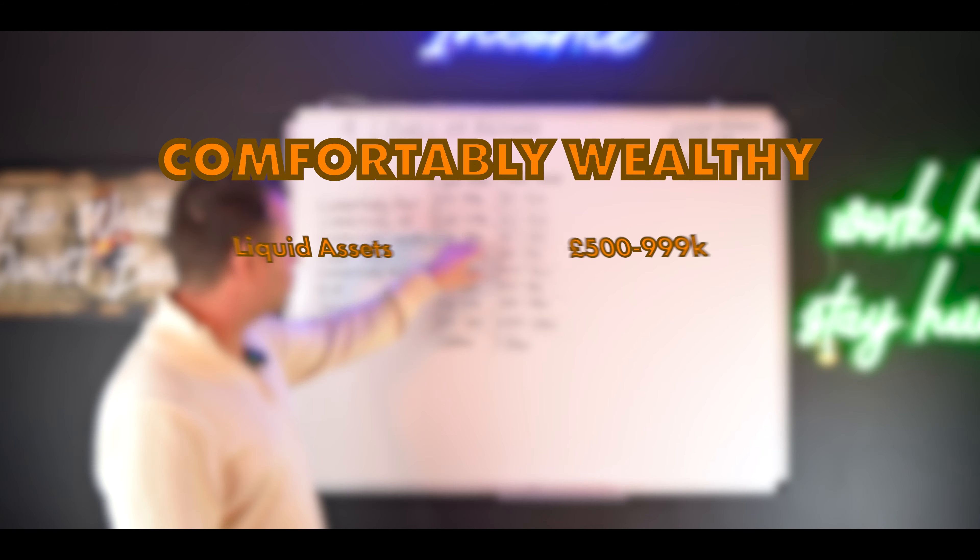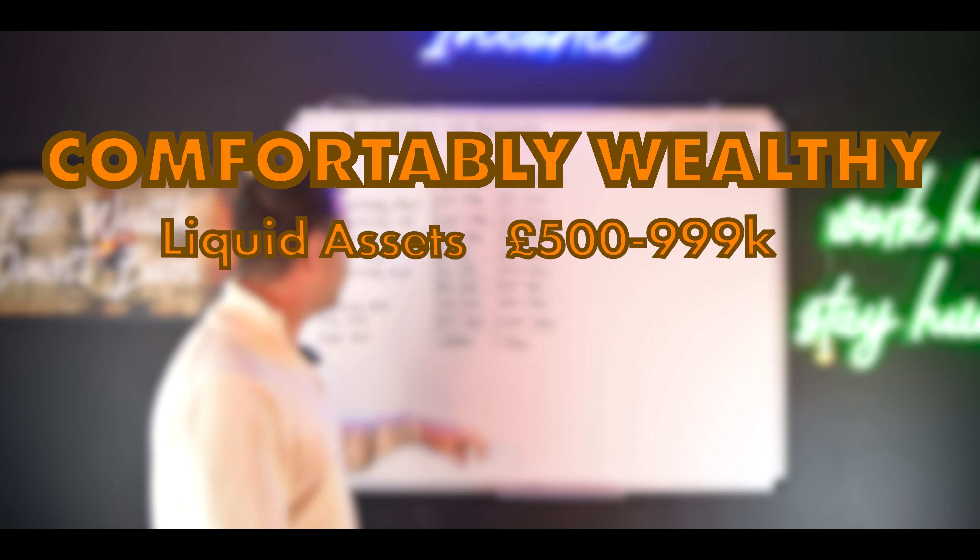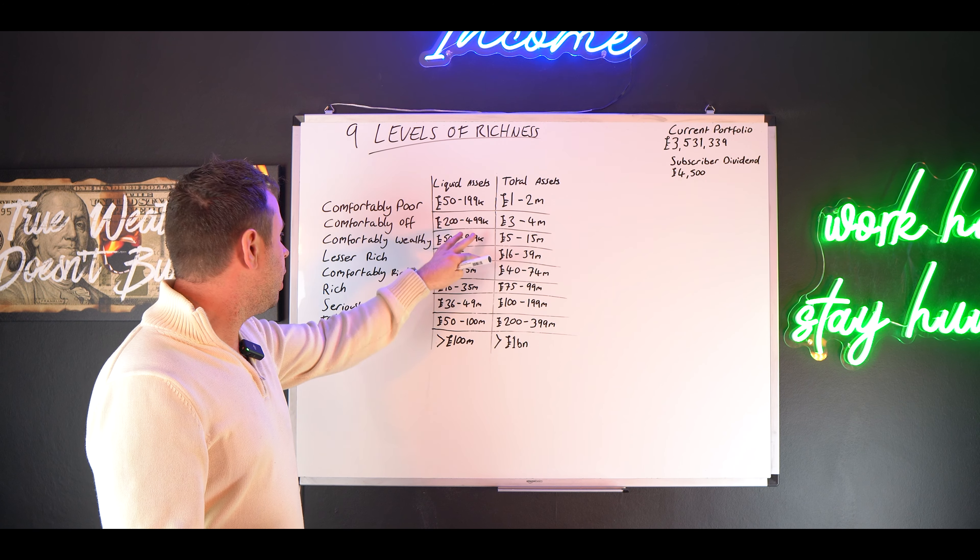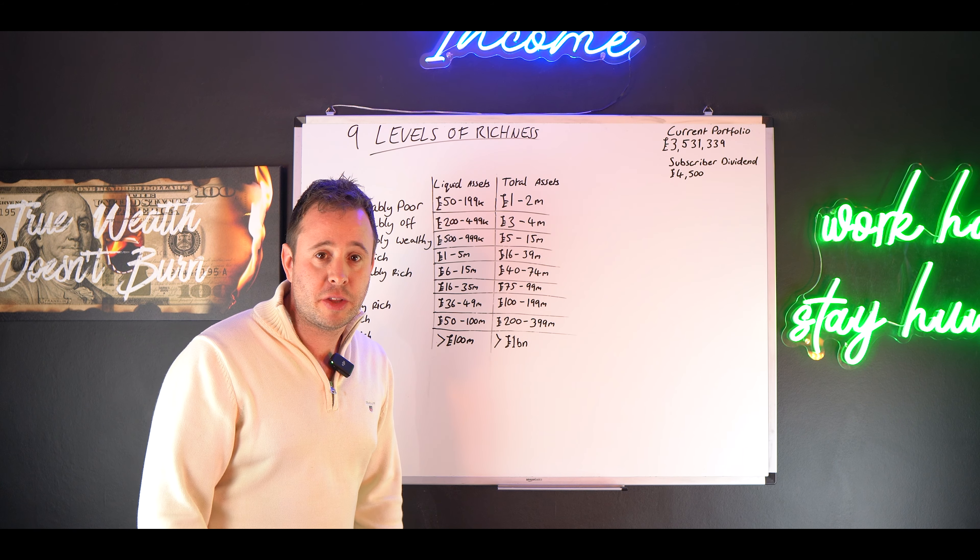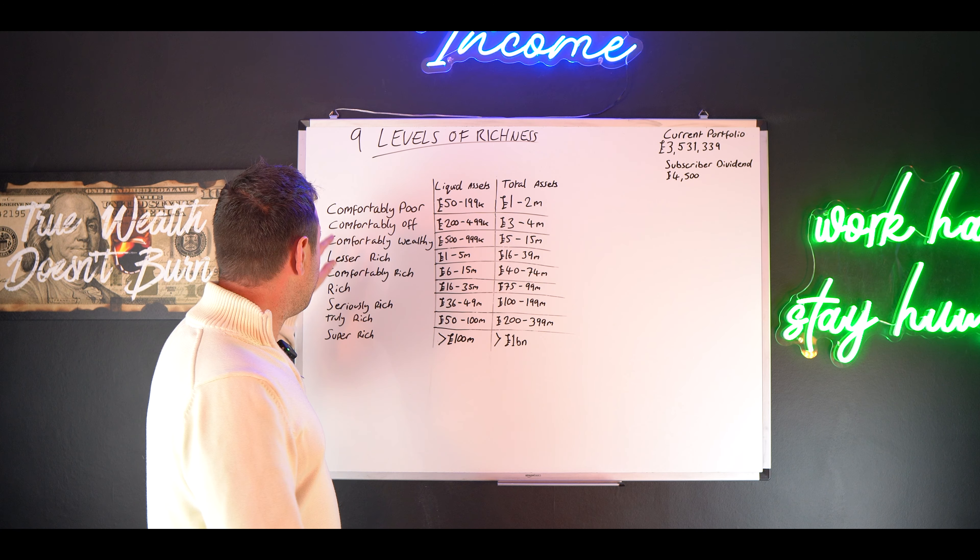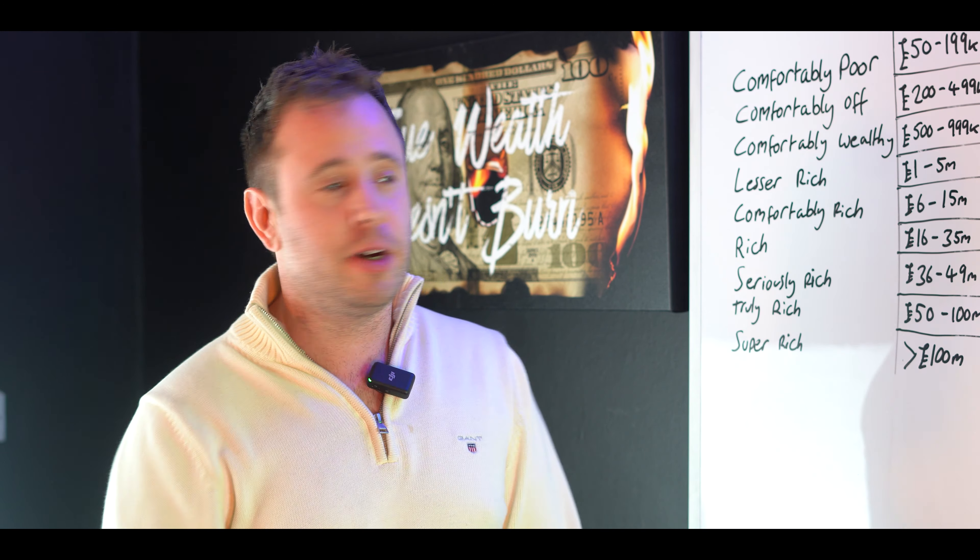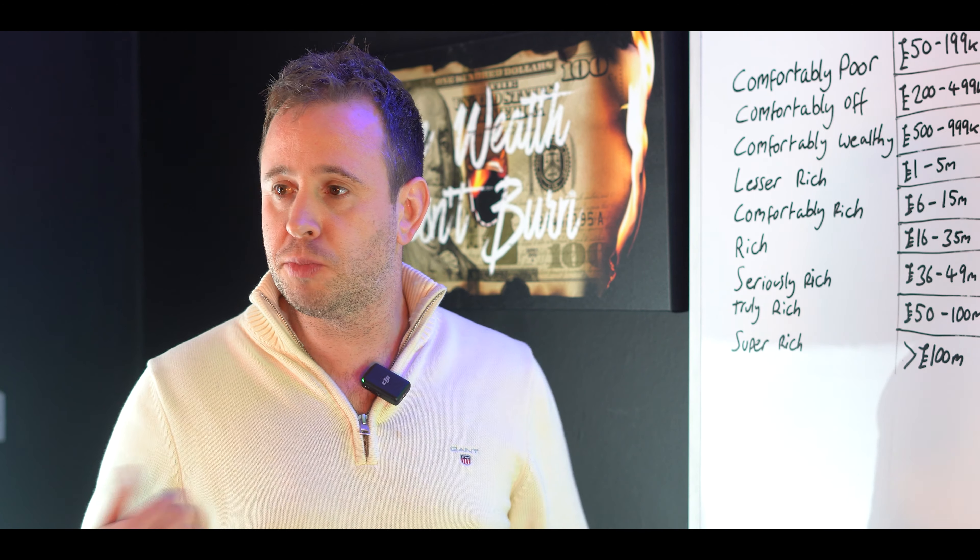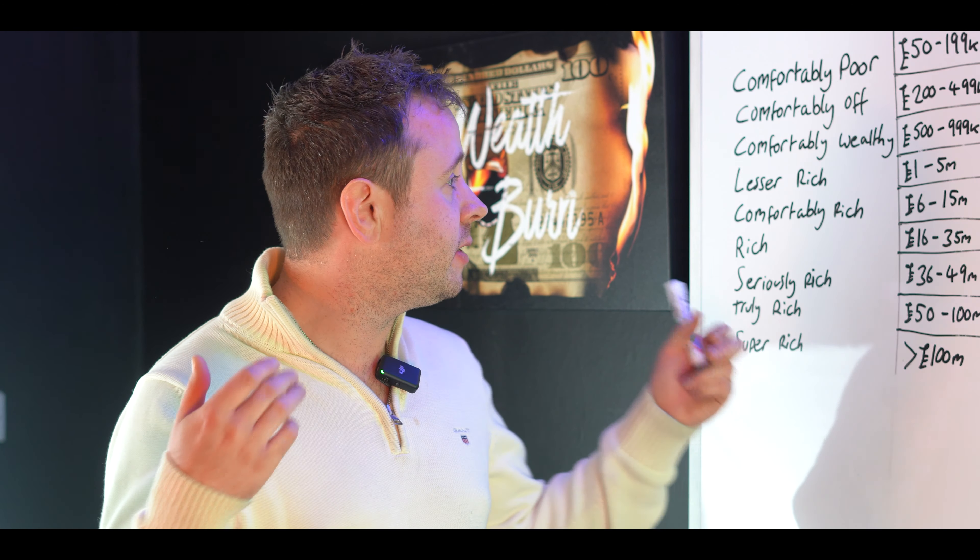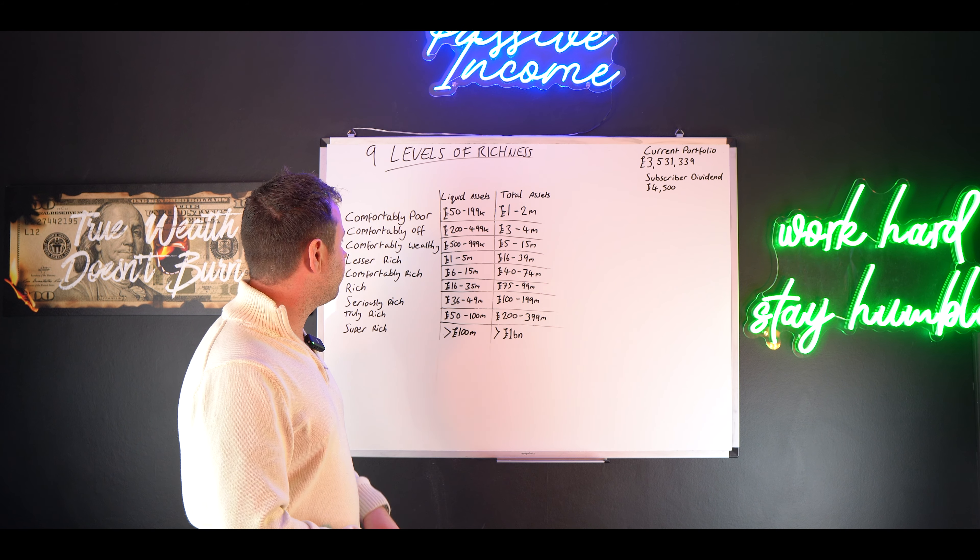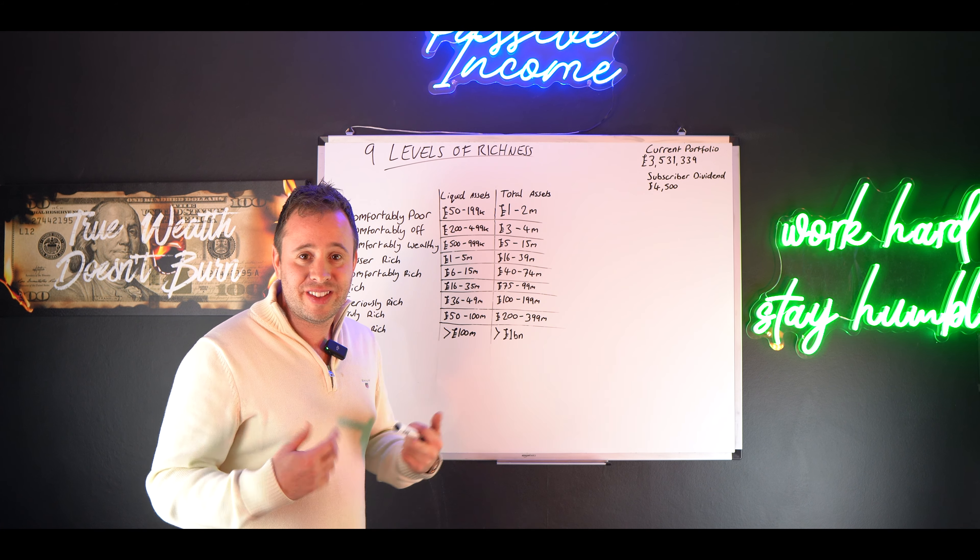Let's look at comfortably wealthy. 500 to 1 million in liquid cash, 5 to 15 million of net assets. I would say I hope to be there mid-2023, something like that. I would hope to be classed as comfortably wealthy by this chart. I'm certainly on the right trajectory. I'm keeping my expenses as low as possible. Got lots of money coming in from lots of different sources: property, investing, businesses, working, all the things that I do with my life. I expect to be comfortably wealthy at some point in 2023.